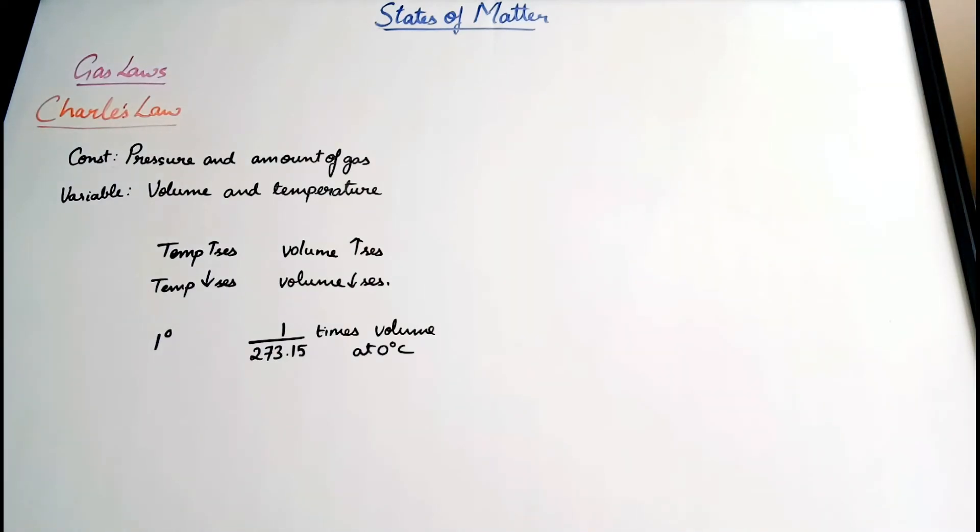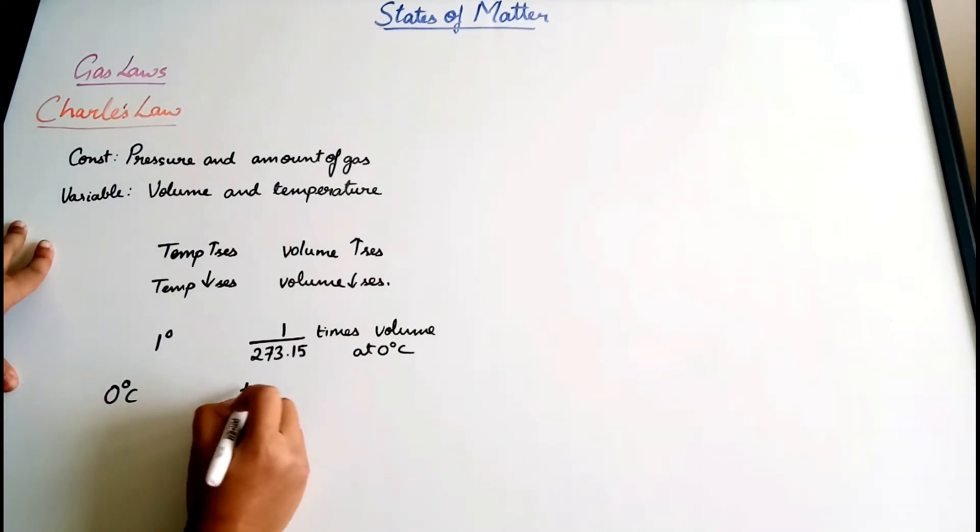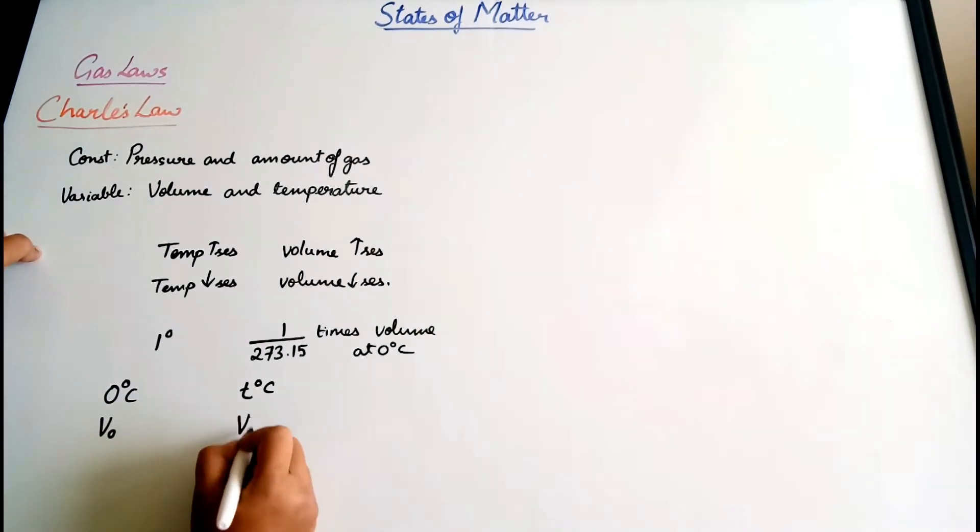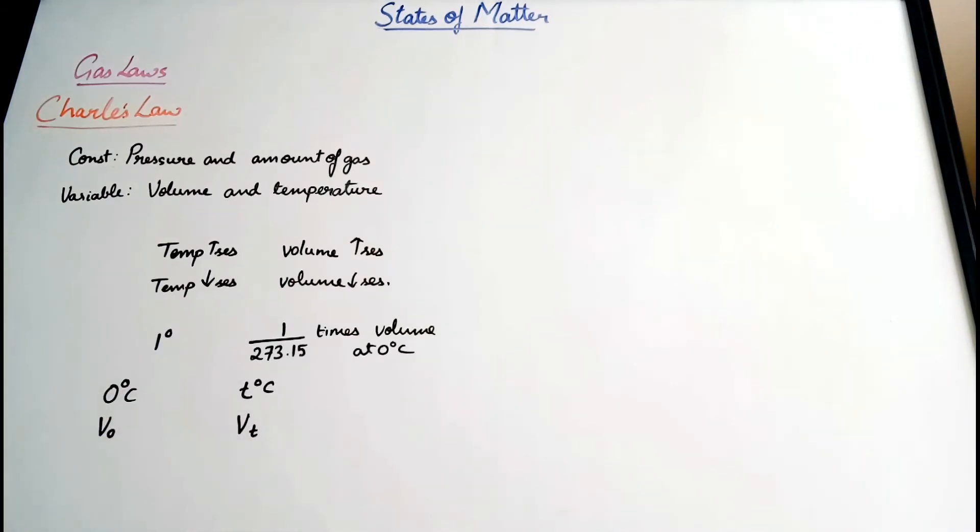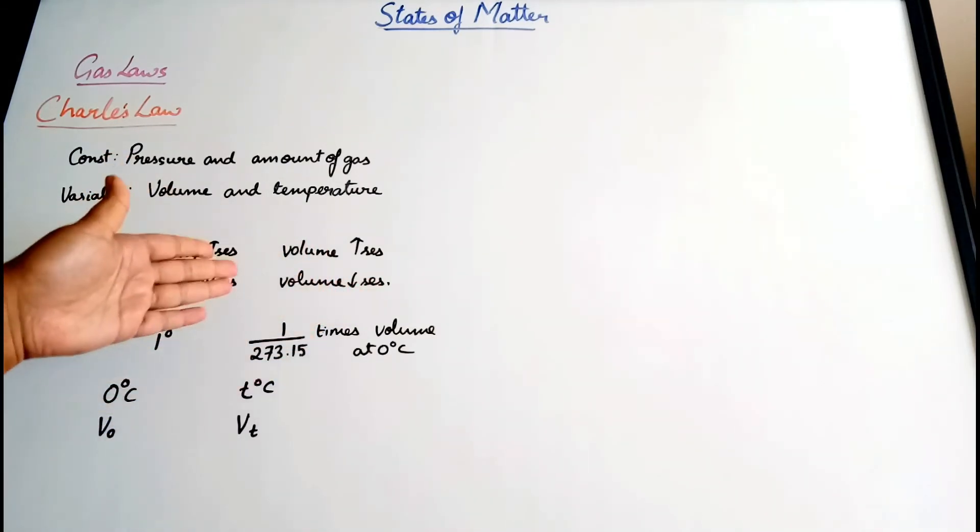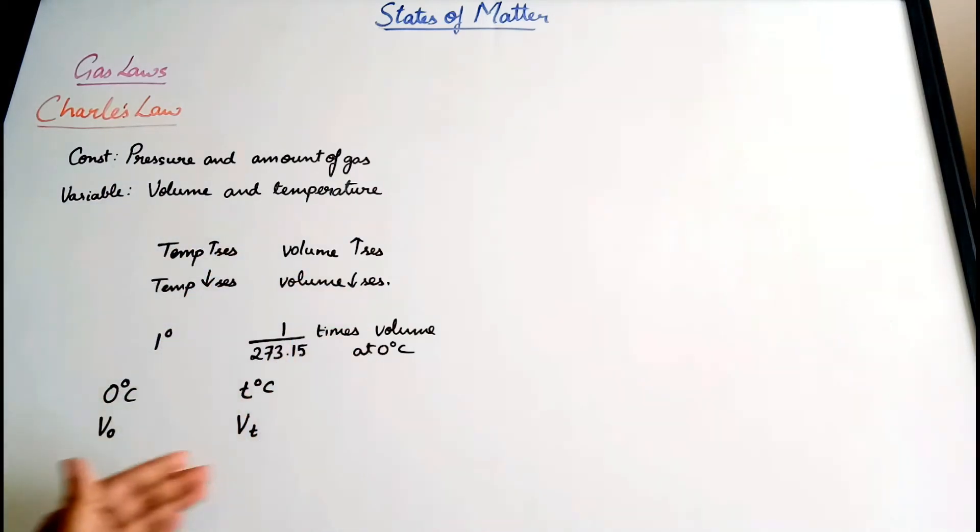From this, let's assume we have two temperatures: 0 degree Celsius and T degree Celsius. At 0 degree Celsius, volume was supposed to be V₀ and for T degree Celsius, volume is supposed to be Vₜ. And we know for every 1 degree increase in temperature, volume increases by 1/273.15 times the volume at 0 degrees Celsius. Based on this, they came up with the relation.